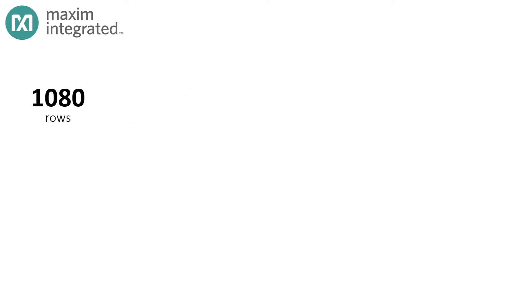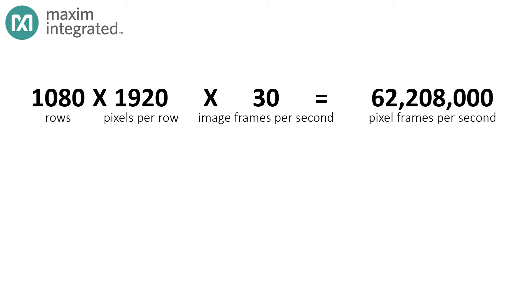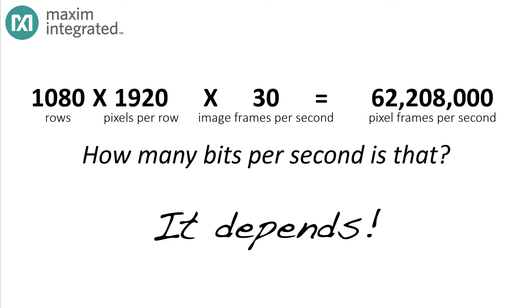If you're sending a 1080p HD video stream, we've seen that you'll need to transmit something like 60 million pixel frames per second. A reasonable question to ask is, so how many bits per second is that? And the answer isn't unequivocal, it depends.